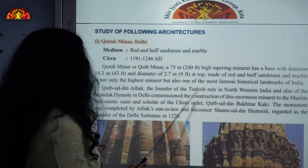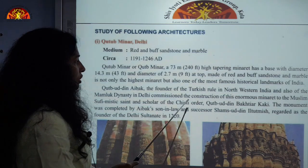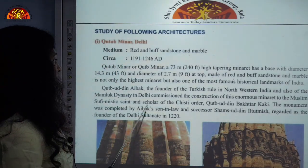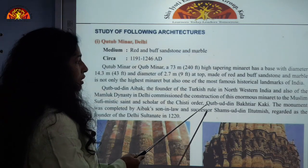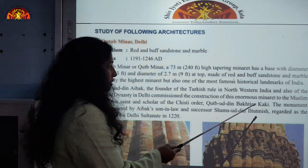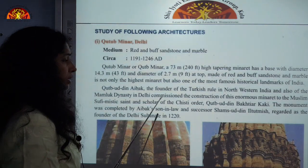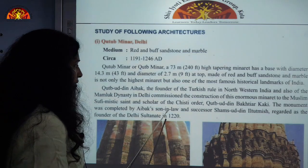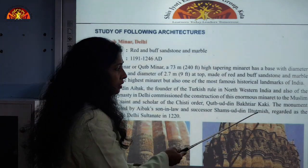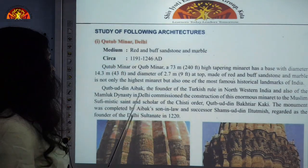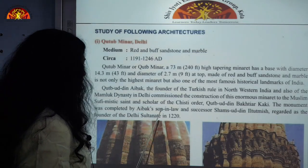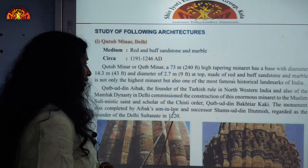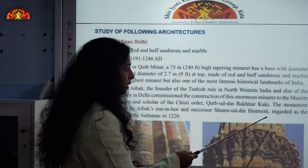The Mamluk dynasty in Delhi commissioned the construction of this enormous minaret in the name of the Muslim Sufi mystic, saint and scholar of the Chishti Order. The monument was completed by Aibak's son-in-law and successor Shamsuddin Iltutmish, who was regarded as the founder of the Delhi Sultanate. Its construction continued from around 1200 to 1220.